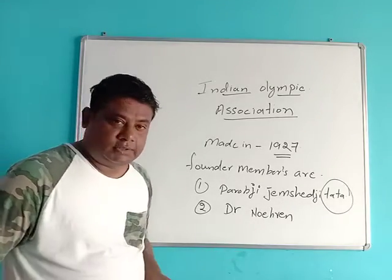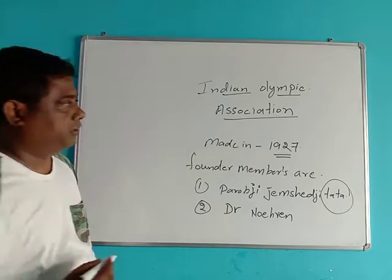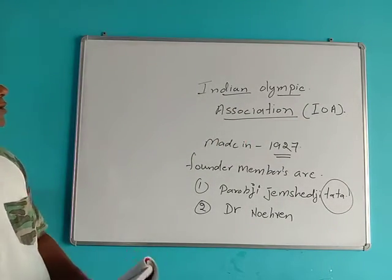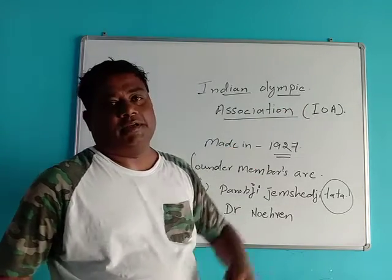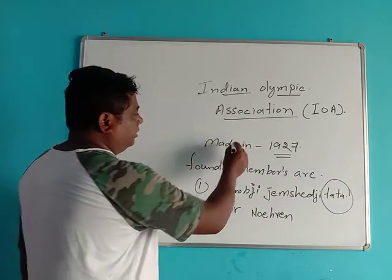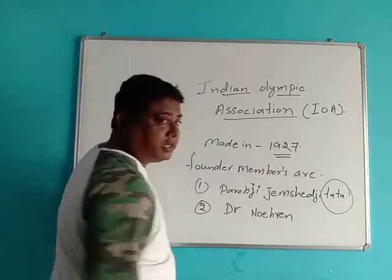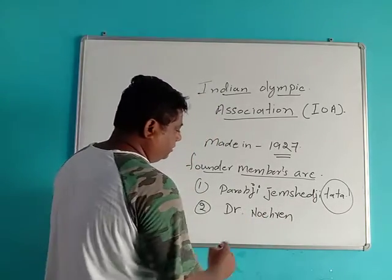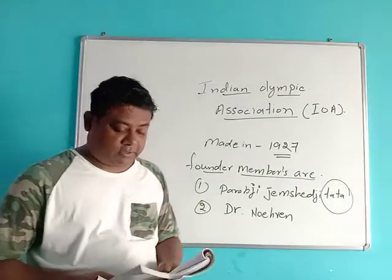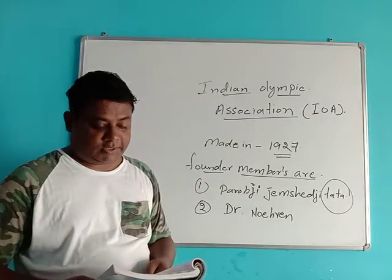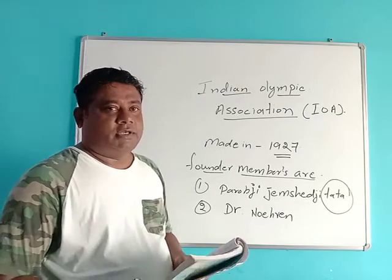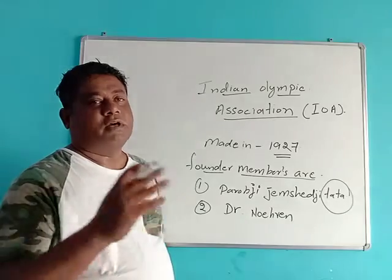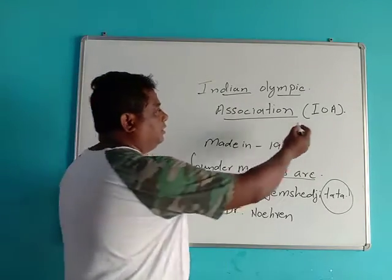The Indian Olympic Association, in short form, is I-O-A. It was made in 1927. The founder members are Dorabji Tata and Dr. Noehren. Later on, many people joined, and the association has a president, vice president, and a whole body of council that works for the Indian Olympic Association.